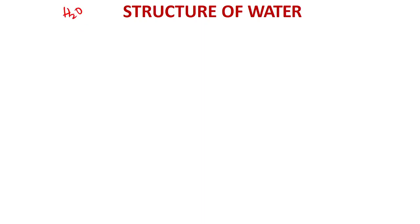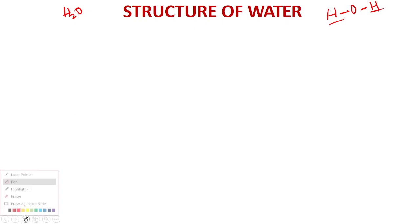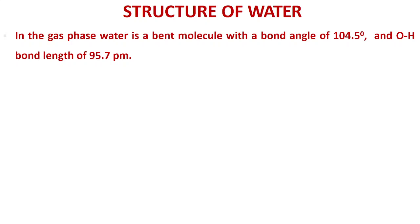Now let's move to the structure of water. The molecular formula of water is H₂O. Up to Class 10, you may have drawn the structure as H–O–H with two hydrogens and one oxygen. In Class 11, we learn more precisely. In the gaseous phase, water is a bent molecule with a bond angle of 104.5 degrees and an O–H bond length of 95.7 picometers.